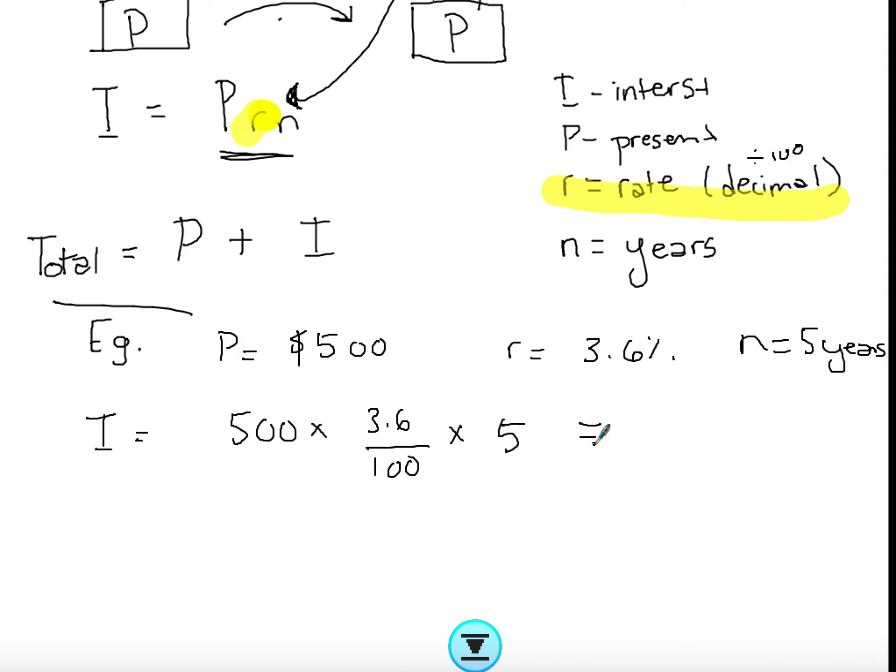So in total my interest is going to be 90. So $90 is not my total investment, it's just how much I'm adding up to my amount. So my total is now the value I started with plus on top the interest I have.